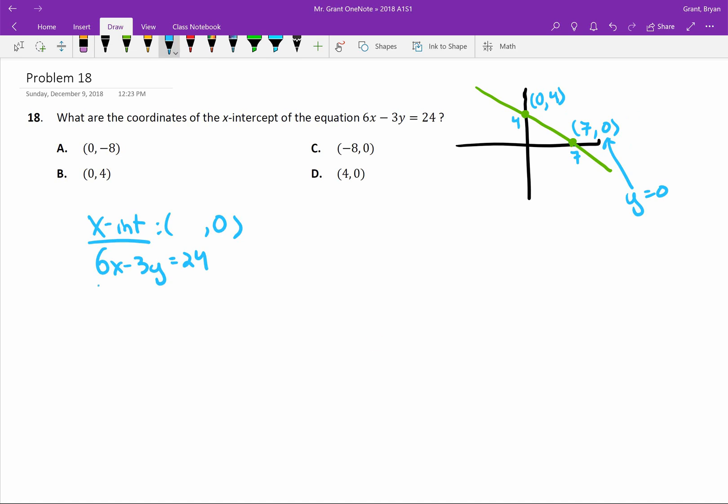So that literally just means take your equation, but instead of y, make it 0. And it looks like this. We're going to clean this up a little bit. I have 6x, negative 3 times 0 is just 0. So that's gone, equals 24.